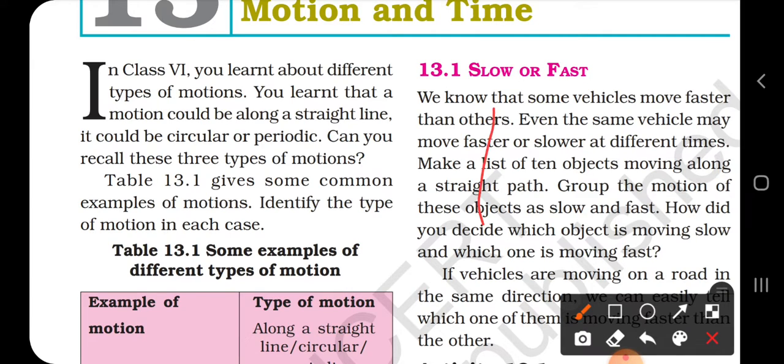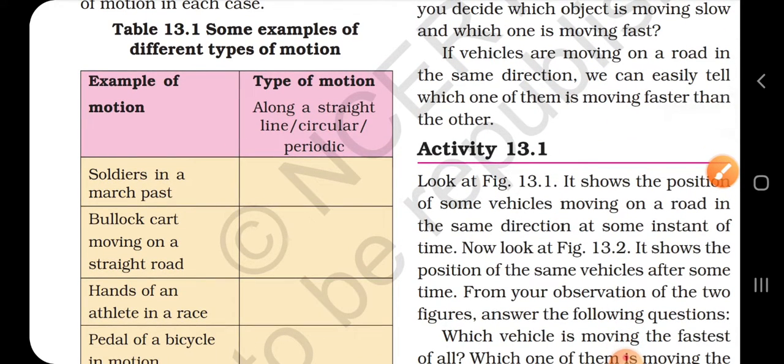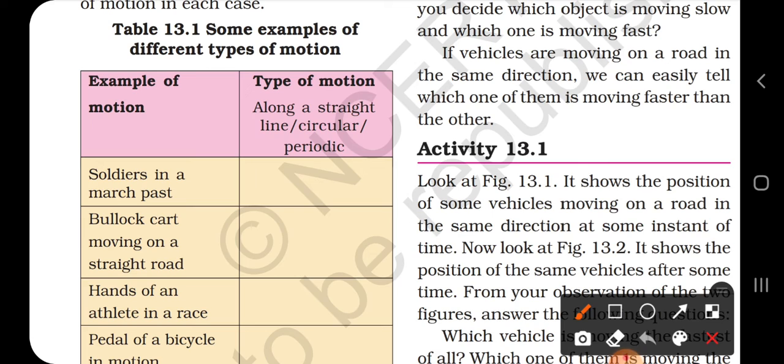Now let's look at some examples of different types of motion. You can see this table showing different examples. Soldiers marching in the march past.